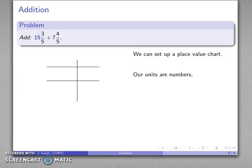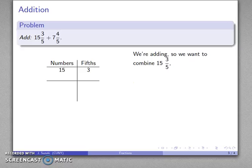Our place value chart, our units are going to be numbers—that would be our 15 and our 7—and our fractions, these are fifths. So our units for the fractions are going to be fifths. We're adding, so we want to combine 15 and 3 fifths (there's our first term) together with 7 and 4 fifths. So there's our 7 and our 4 fifths. We're adding, so we want to combine them.